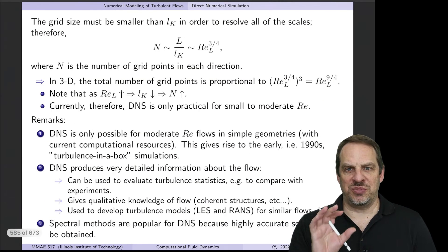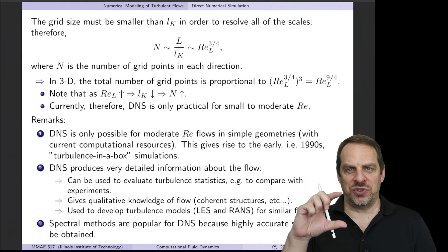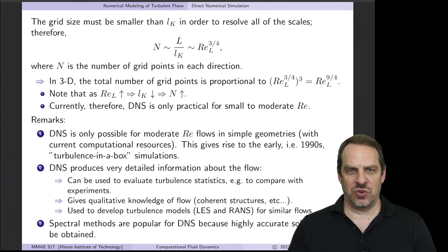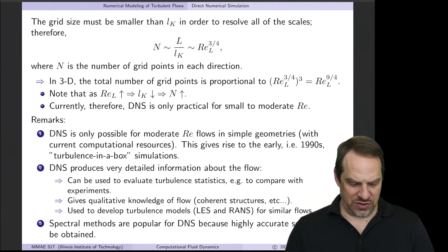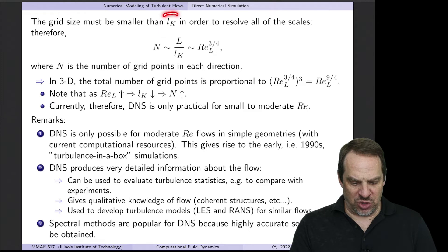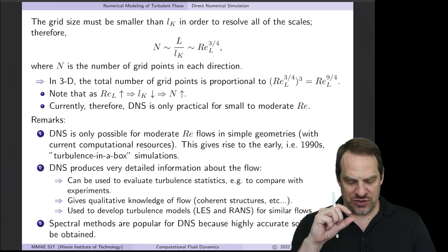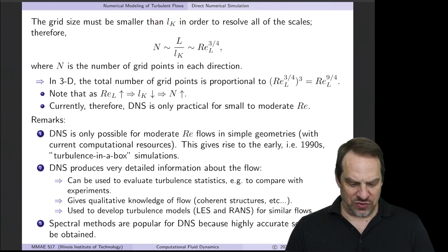Based on these definitions, we can determine an approximation for the number of grid points that we'll need in all three spatial coordinates, x, y, and z. So that'll be given by capital N, the number of points in each of the three directions. It's determined by the Kolmogorov scale at the smallest sizes that we need to resolve.